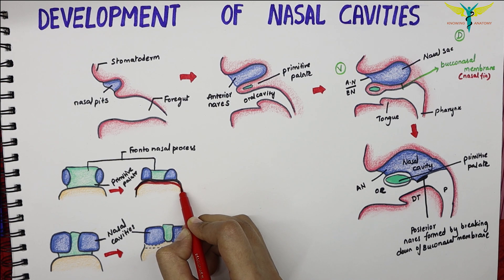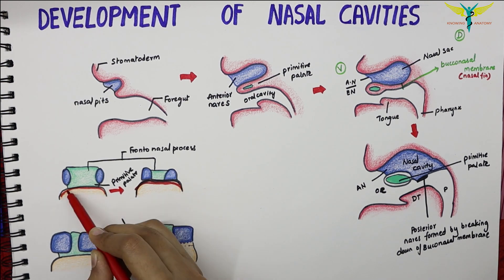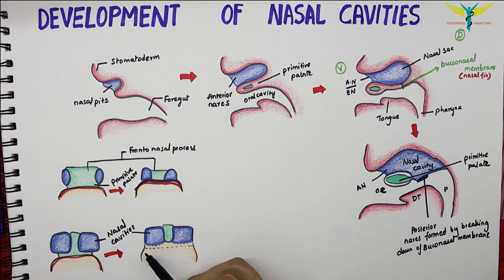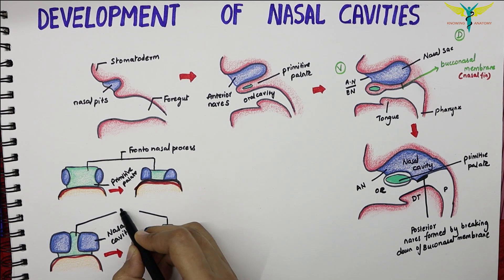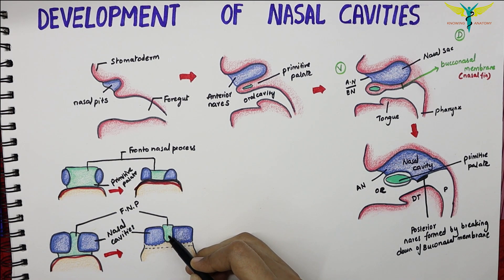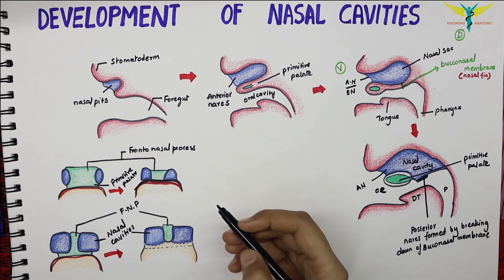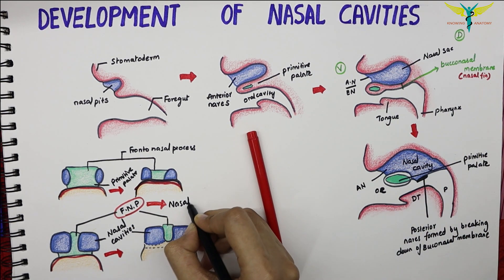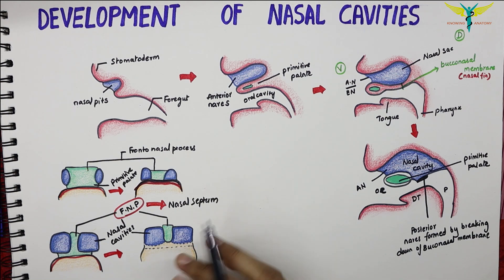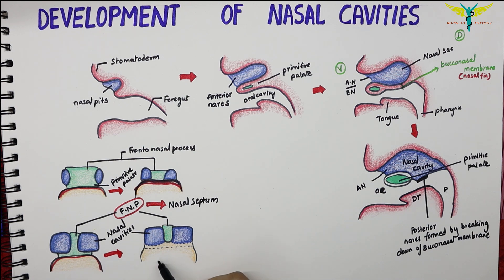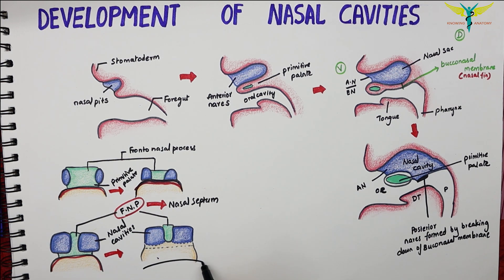You can see the disappearance of the bucconasal membrane and the frontonasal processes becoming thinner to form the nasal septum. The ventral part of the nasal septum is attached below to the primitive palate. More posteriorly, the septum was first attached to the bucconasal membrane, but after it disappears, the nasal septum finally becomes attached to the primitive palate. The nasal cavities are separated from the mouth by the development of the palate.